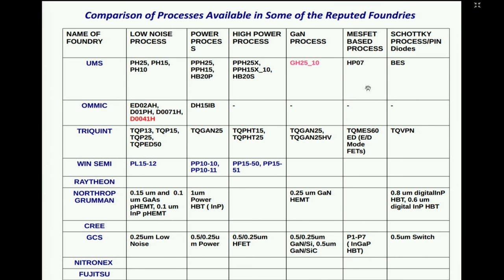A power process will have a P prefix added, and an X suffix indicates even higher power. There is a plethora of choice available from all foundries, making it a very difficult task to figure out what is best for your application — that is the first thing one needs to zero in on.